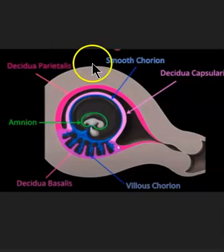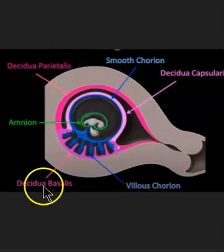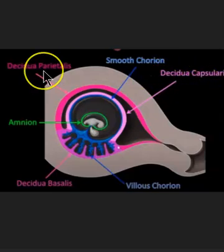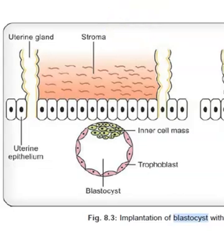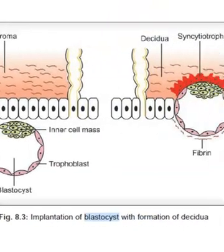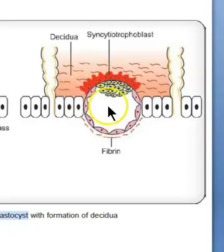So if someone asks you the difference between Decidua basalis, Decidua capsularis, and Decidua parietalis, how will you explain? The uterine lining, that is the endometrium, changes its name from endometrium to Decidua as soon as the blastocyst — which is day 5 of embryonic development — implants into the favorable uterine lining. This endometrium is then called Decidua. That is where the word Decidua comes from.